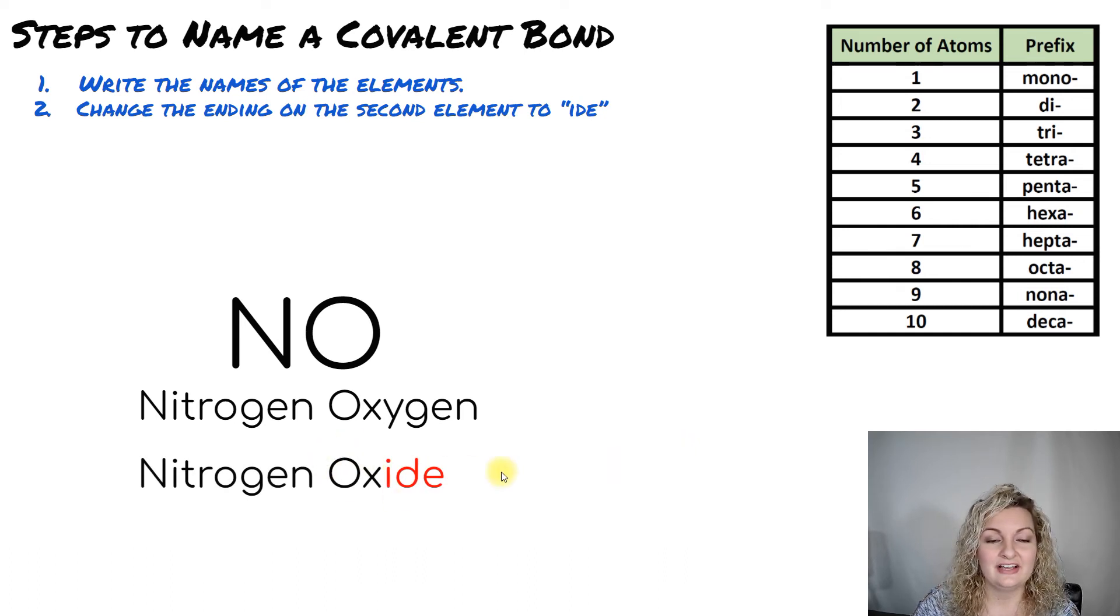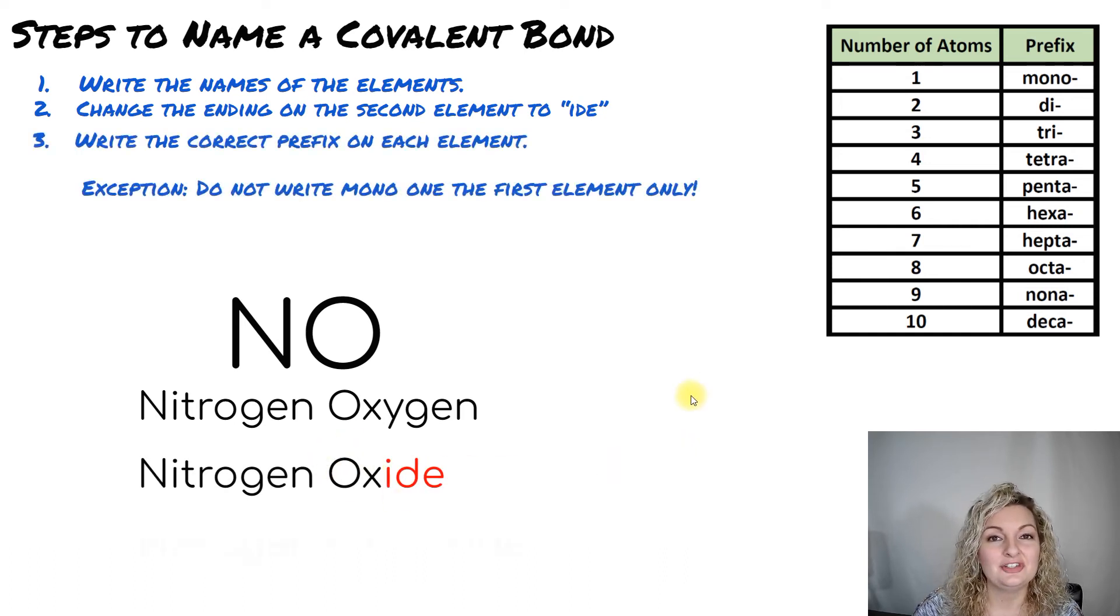So again, oxide. But now we're going to go ahead and change our prefixes and put those in front of the word. Now the first one, it has an understood one. Now one is mono. And that is the exception to our rule.